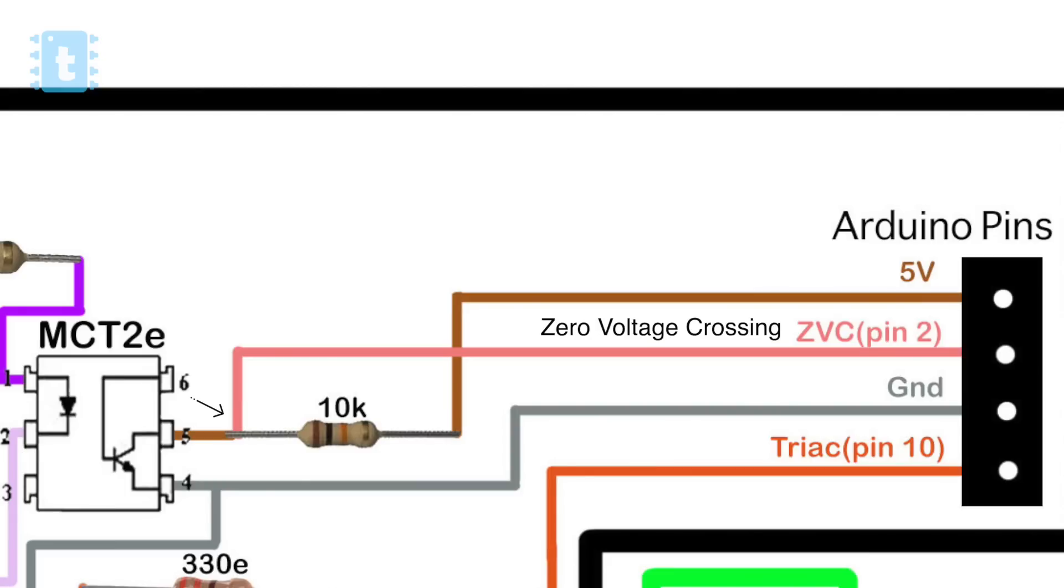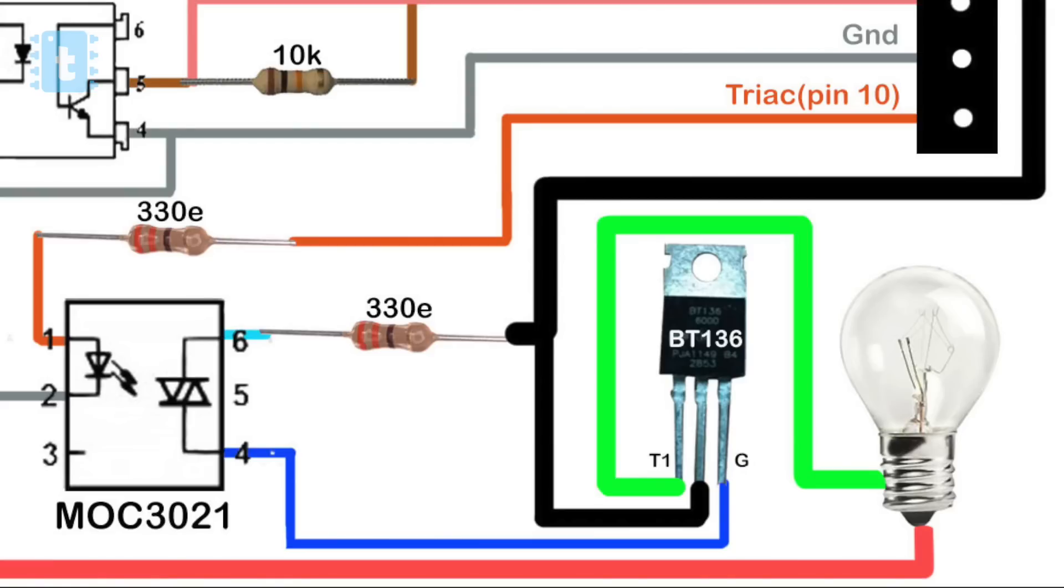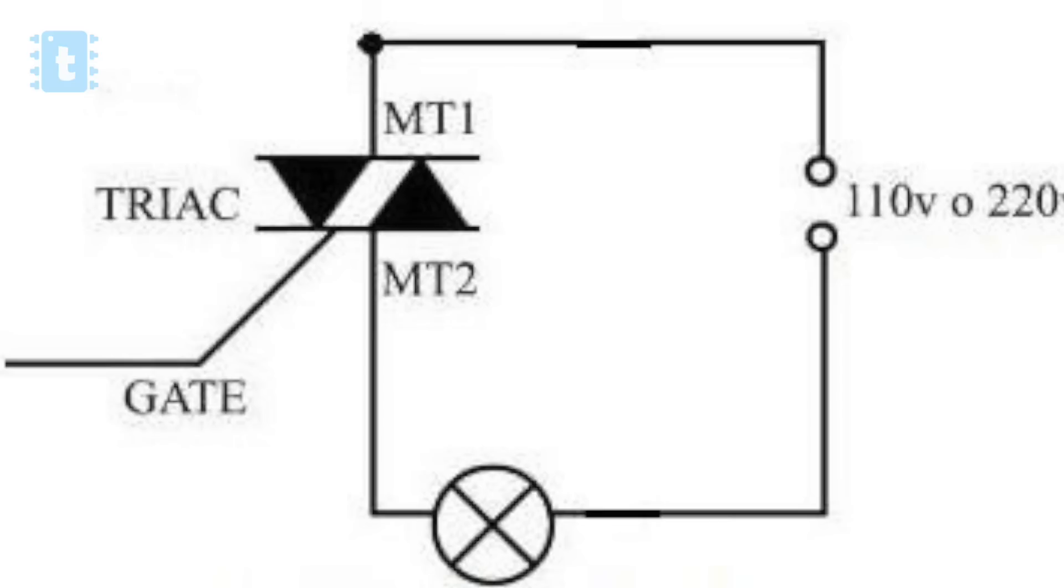Now here we are also using one TRIAC BT-136. If I explain the working of TRIAC in short, then if we provide the signal to the gate terminal, then it allows the current to flow from T1 to T2 or T2 to T1 as well. So it is perfect to control AC current using TRIAC.